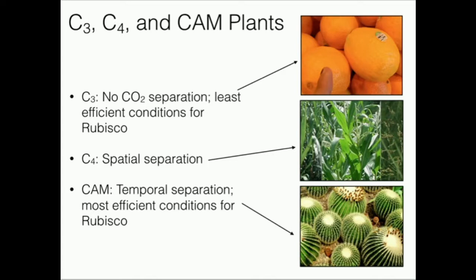In C4 plants, that gives us spatial separation — the place where we intake O2 and CO2 is not the same cellular location as where we fix the carbon. We actually selectively move the carbon dioxide into a different location and fix it there. In CAM plants — crassulacean acid metabolism — the most efficient means of carbon fixation involves temporal separation: some things are done during the day when there's light, and some things are done at night when it's dark. C4 plants separate based on the location in the cell; CAM plants separate based on time.